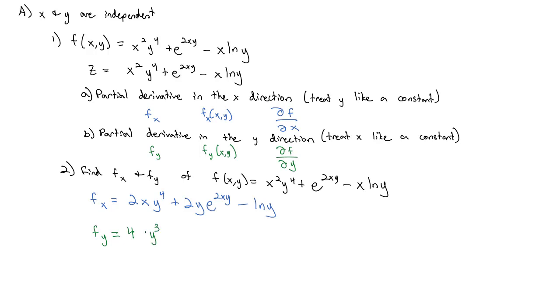Plus, e to the stuff is e to the stuff times the derivative of the stuff with respect to y this time. So y is our variable, its derivative is 1, and 2x, the constant, gets tagged on. Minus the derivative of x natural log of y with respect to y. The natural log of y, its derivative is 1 over y, and that x, the constant, is just tacked on.